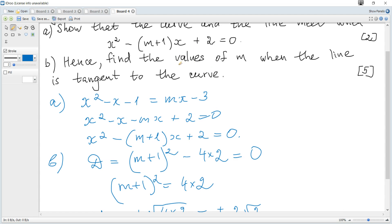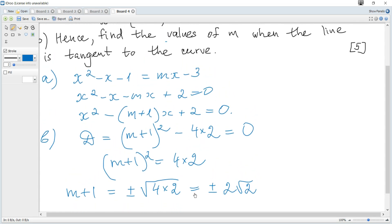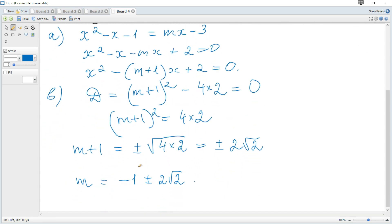It cannot be given here 'find the value' and there are two or more solutions. So we get two possible values of m: negative 1 plus minus 2 root 2.